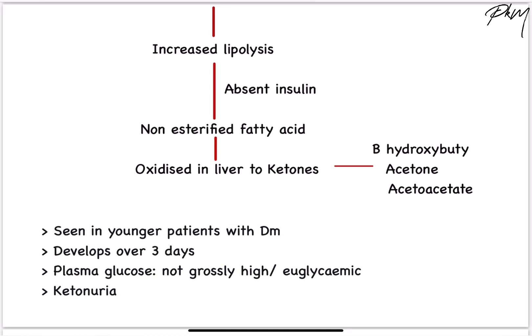These free fatty acids are converted to ketone bodies in the liver — specifically beta-hydroxybutyrate, which is further converted to acetone and acetoacetate. These ketone bodies are excreted in urine. DKA is commonly seen in younger patients with diabetes mellitus and develops over a course of 3 days. Blood glucose levels are raised but not as high as seen in HHS. Some patients also present as euglycemic DKA with just ketone body excretion in urine.